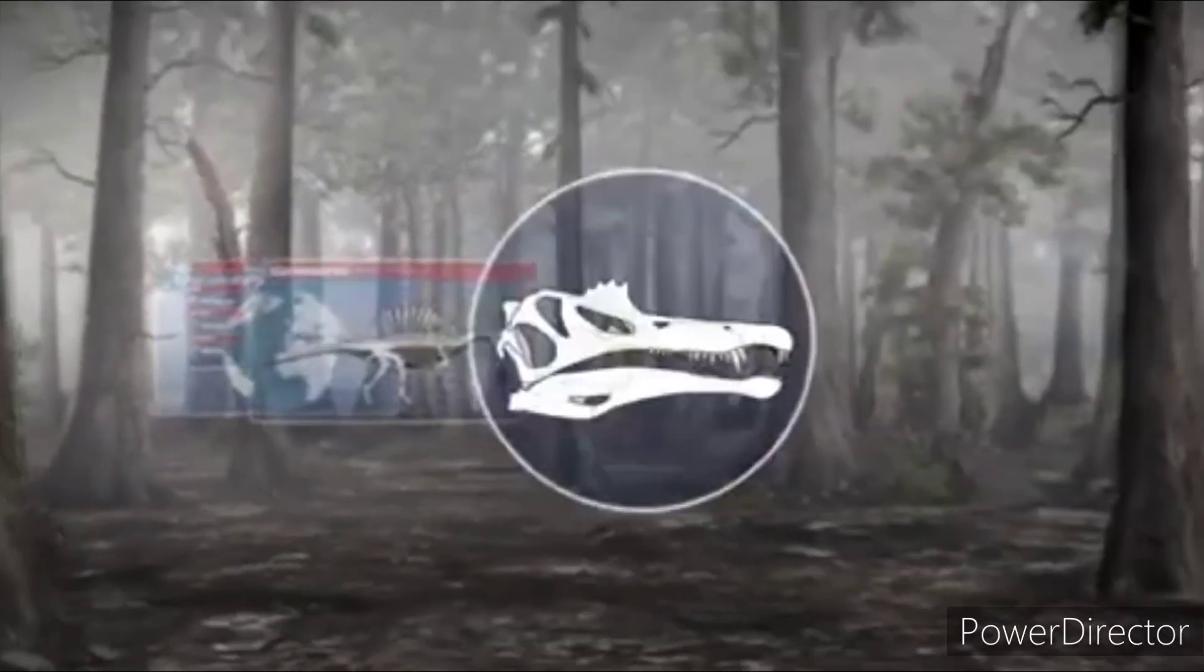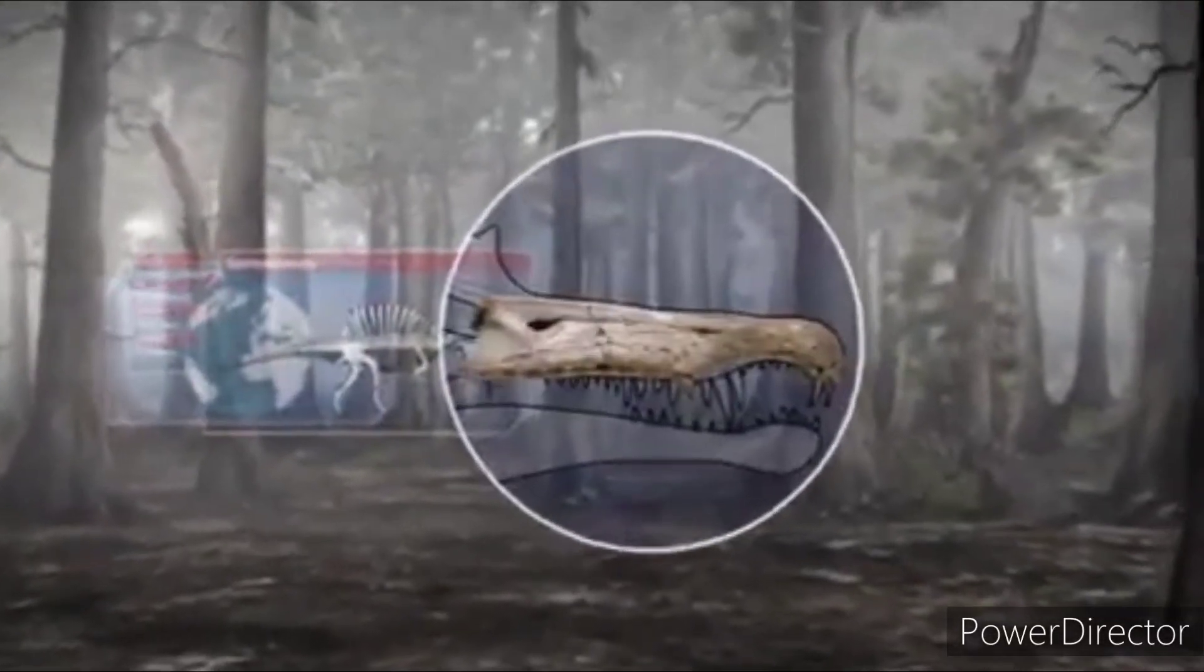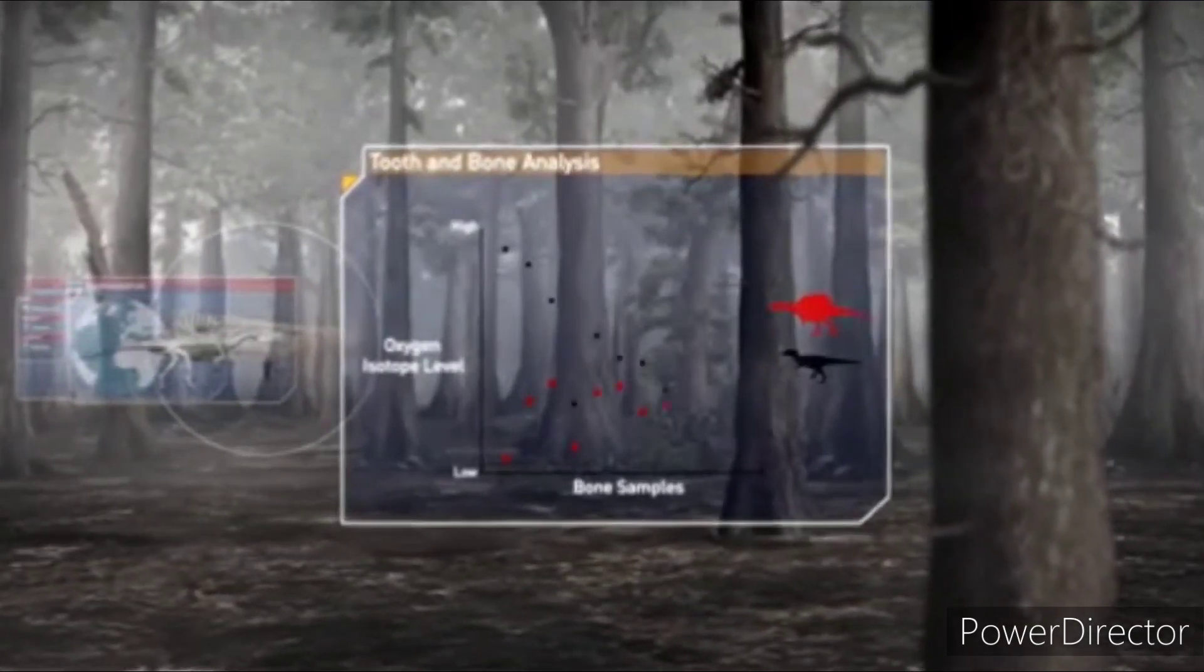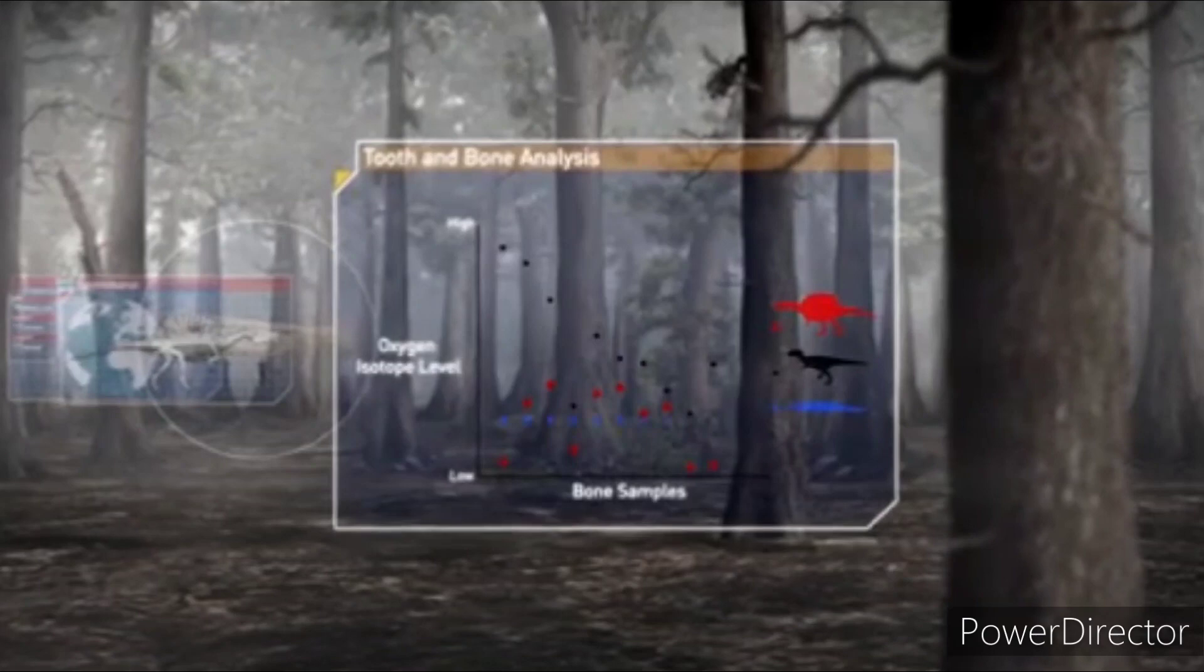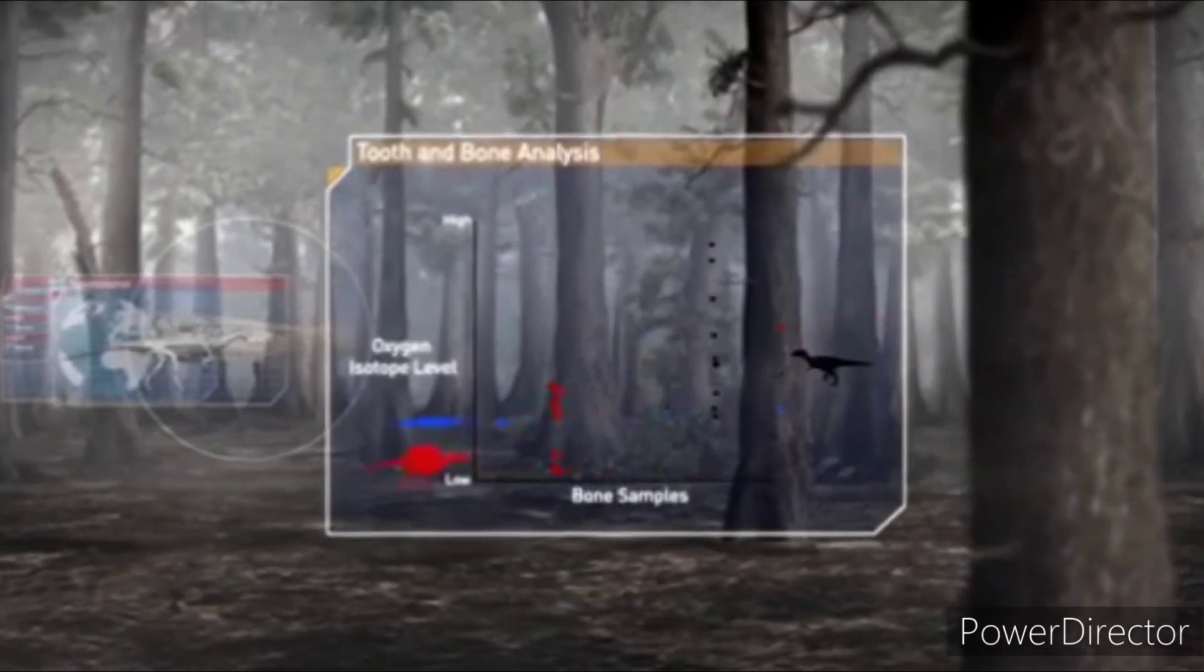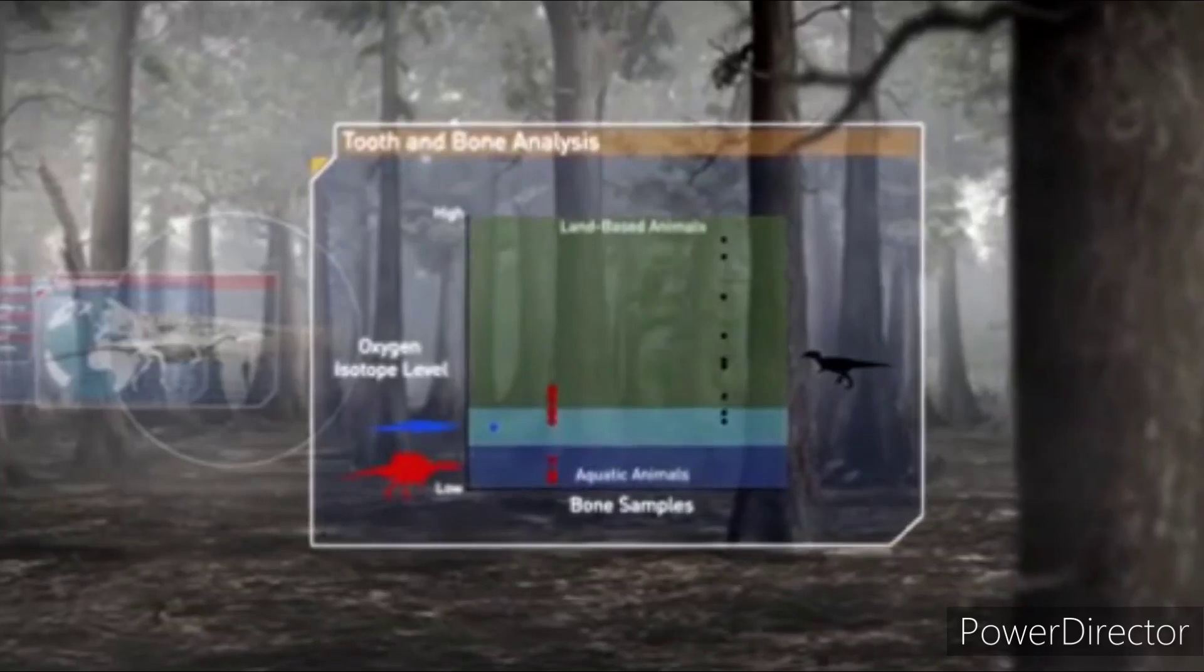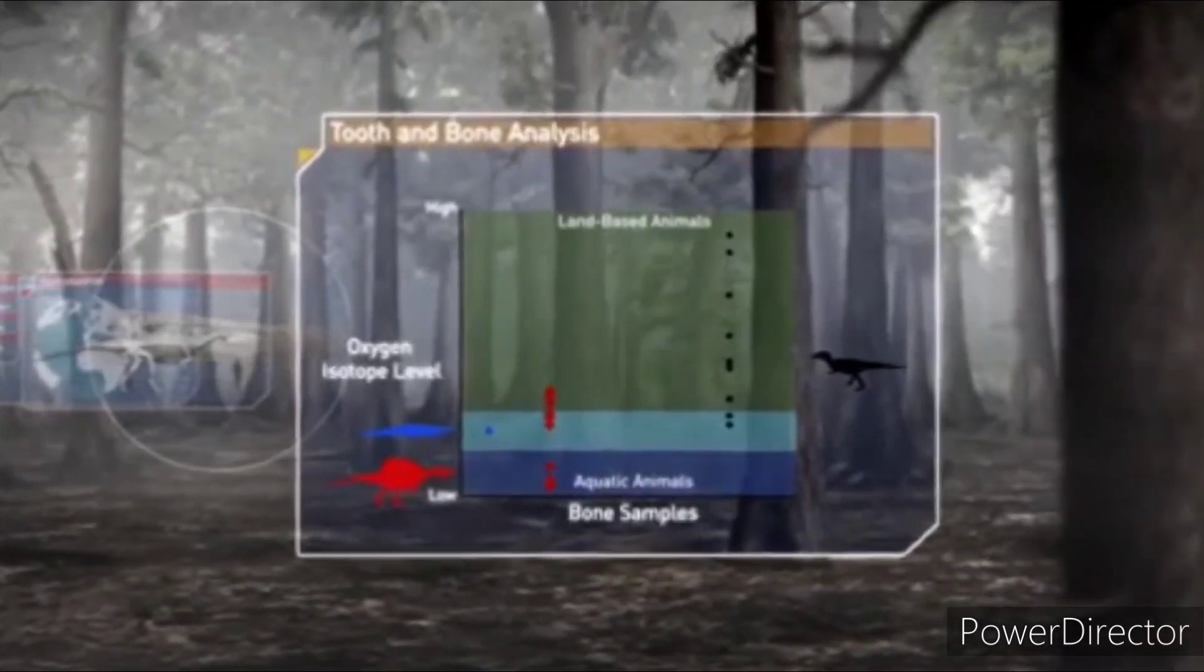In 2010, analysis of their bones and teeth revealed something surprising. Chemical traces found in the fossils suggested that Spinosaurus lived more like a crocodile than other land-based dinosaurs. It showed that these dinosaurs spent a large part of their lives in water.